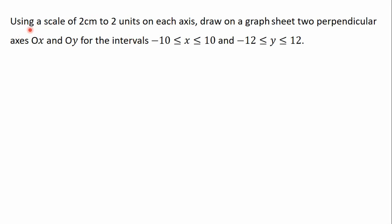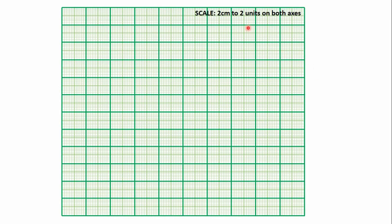Part A says that using a scale of 2 cm to 2 units on each axis, draw on a graph sheet two perpendicular axes OX and OY for the interval X between minus 10 and positive 10, and Y between minus 12 and positive 12. So let's go to our graph sheet. The scale we are using is 2 cm to 2 units on both axes.